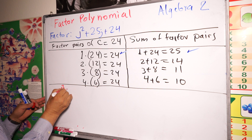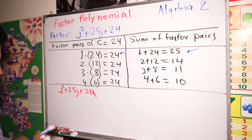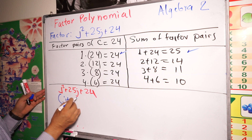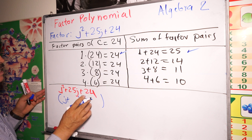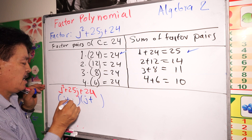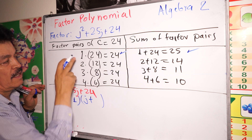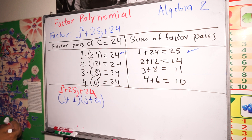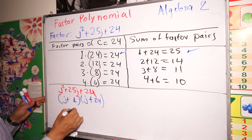So for j squared plus 25j plus 24, the factors are j plus 1 and j plus 24, because 1 and 24 are the factor pair we identified. The factored form is (j + 1)(j + 24).